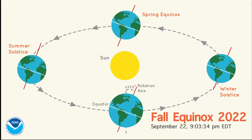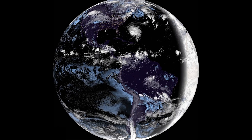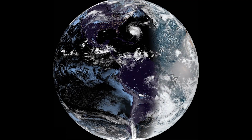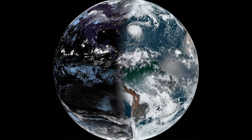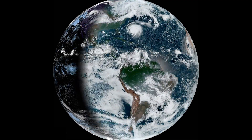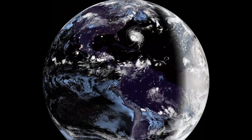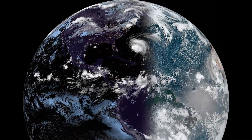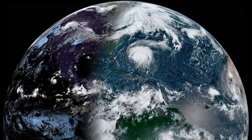The fall, or autumnal equinox, is today at 9:03 and 34 seconds PM Eastern Daylight Time. This is when the Sun shines directly over the equator, resulting in nearly equal amounts of day and night throughout the world.